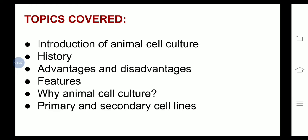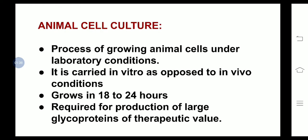Coming to the introduction of animal cell culture: the process of growing animal cells under laboratory conditions is what we call animal cell culture. It is carried out in vitro, i.e., laboratory conditions, as opposed to in vivo conditions, i.e., living or as it is in nature. It grows in 18 to 24 hours.